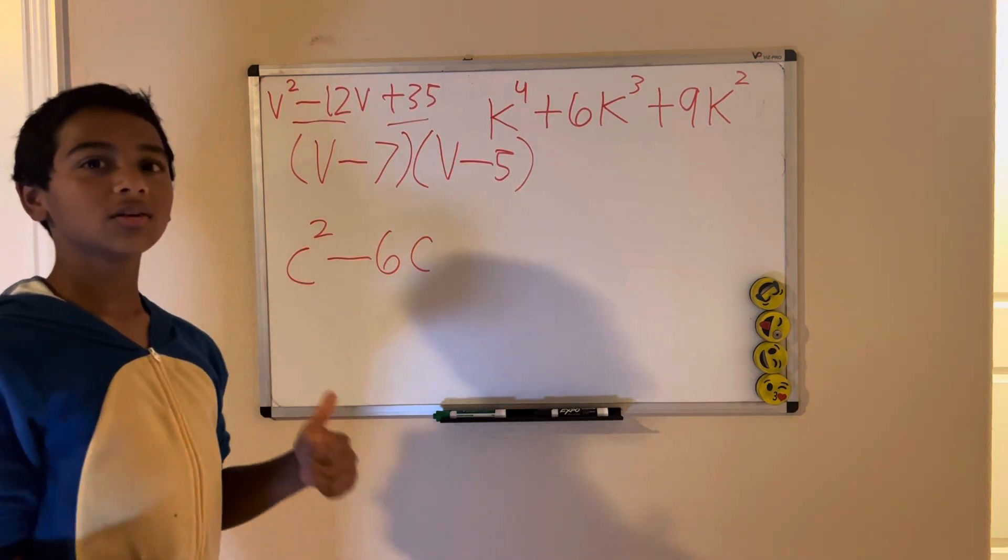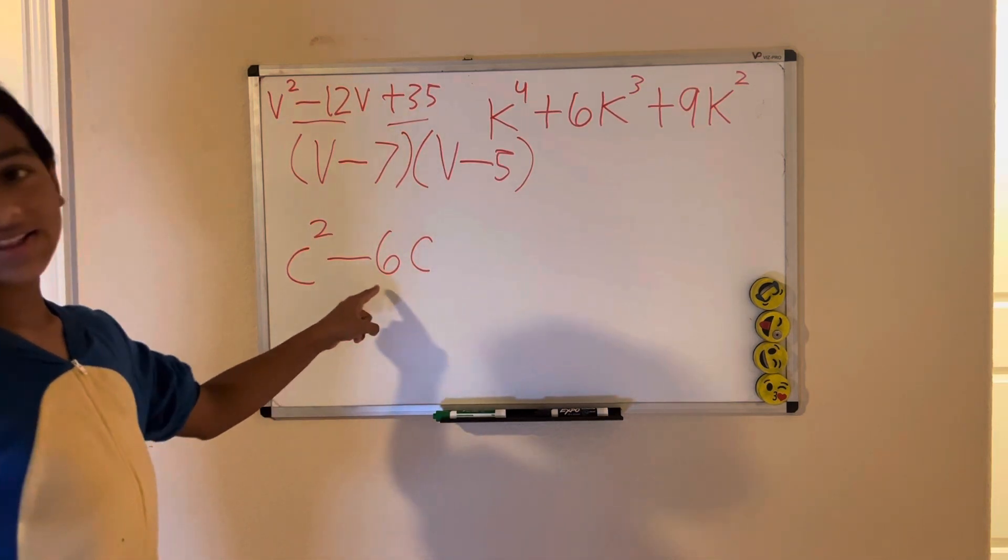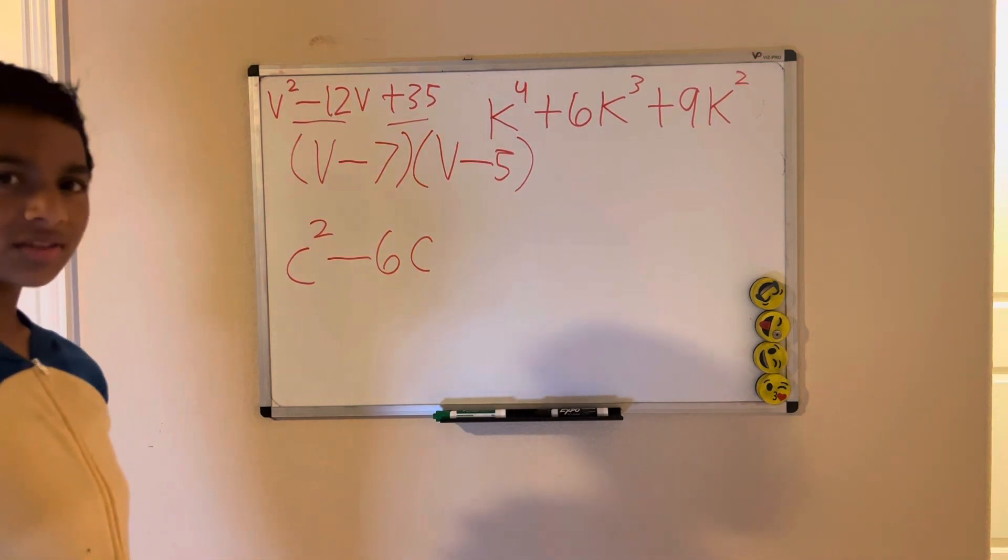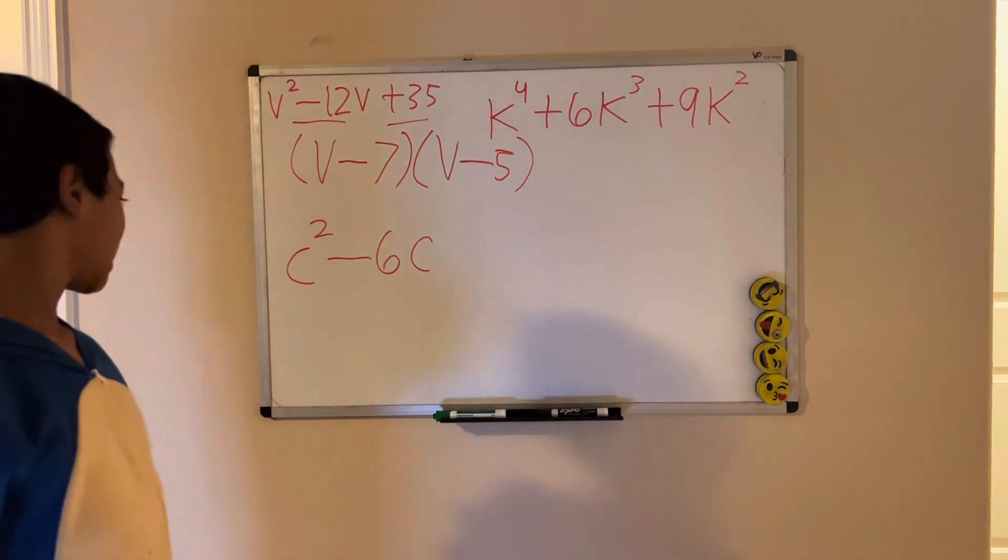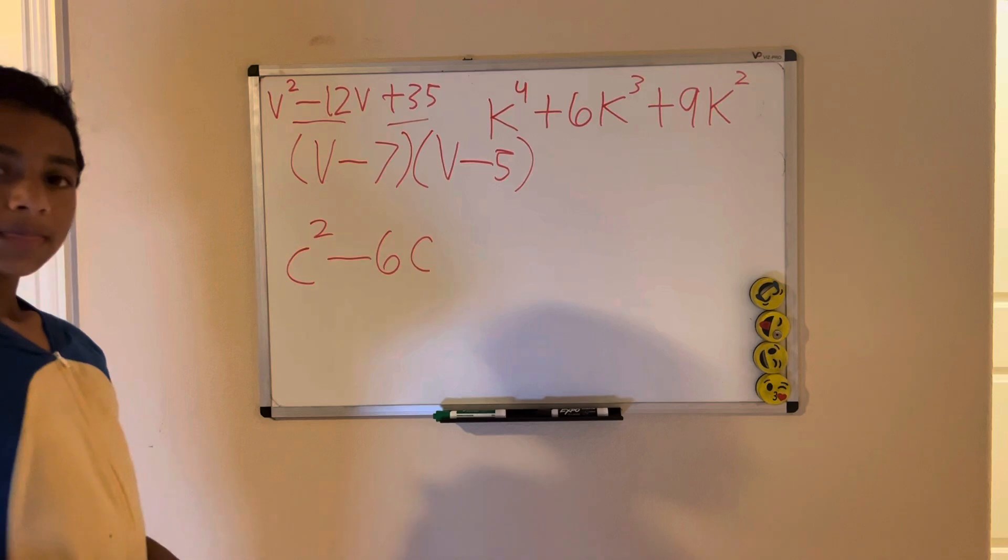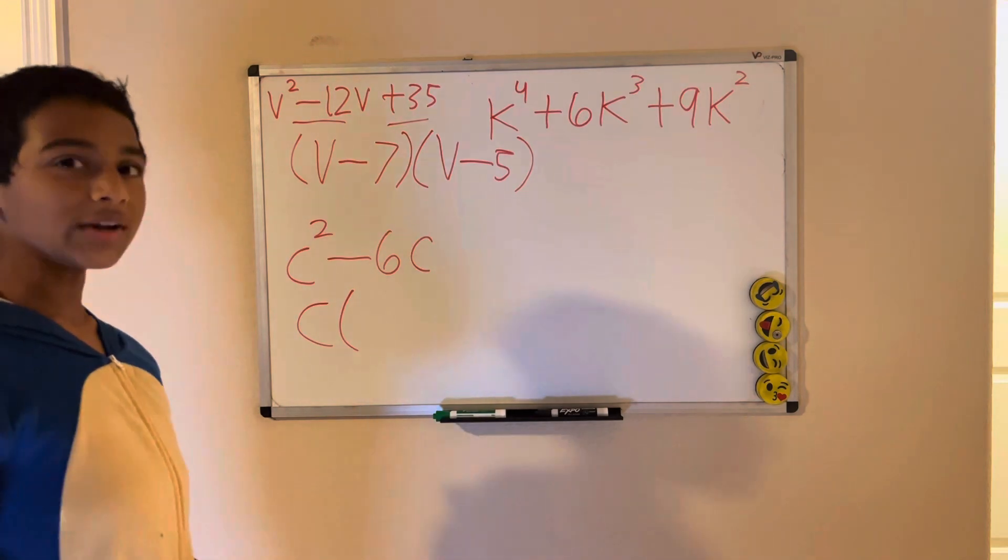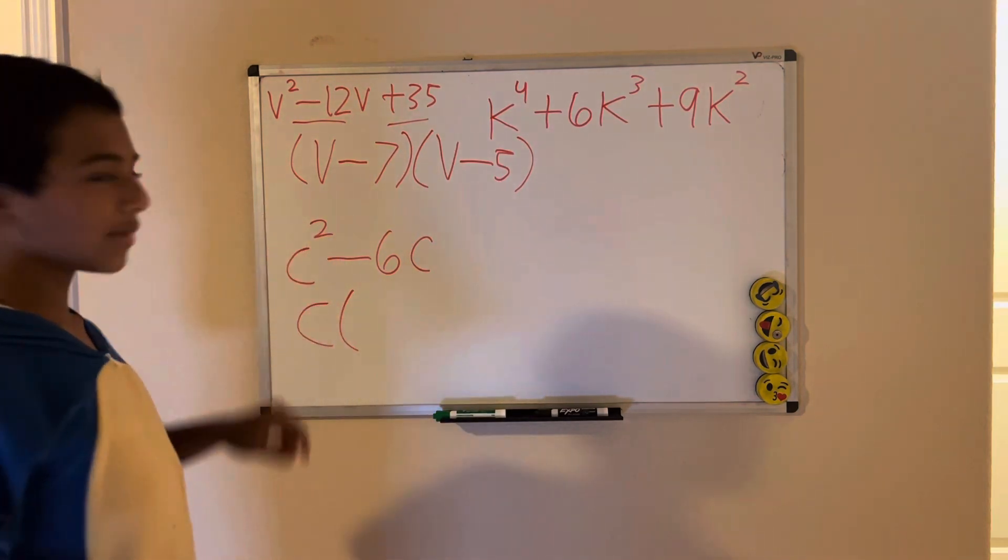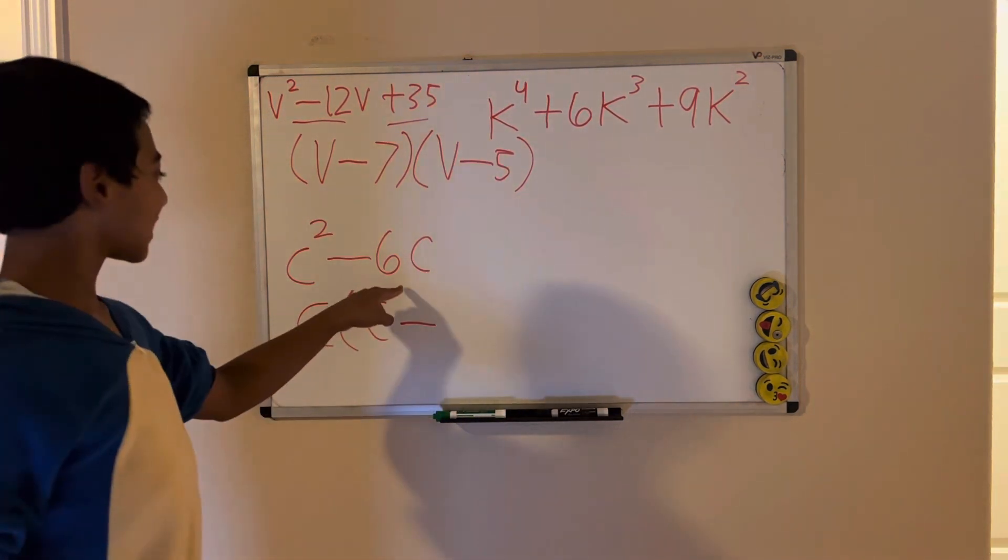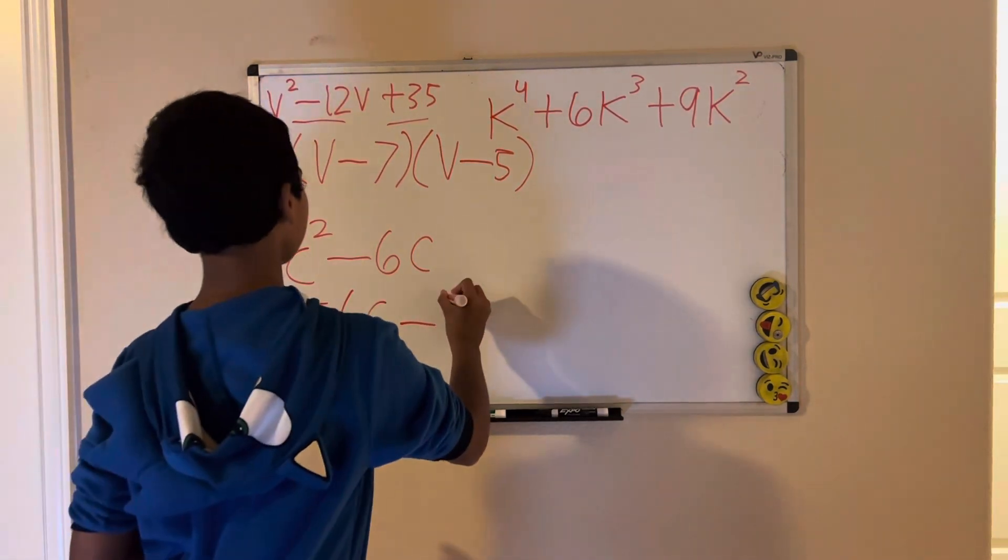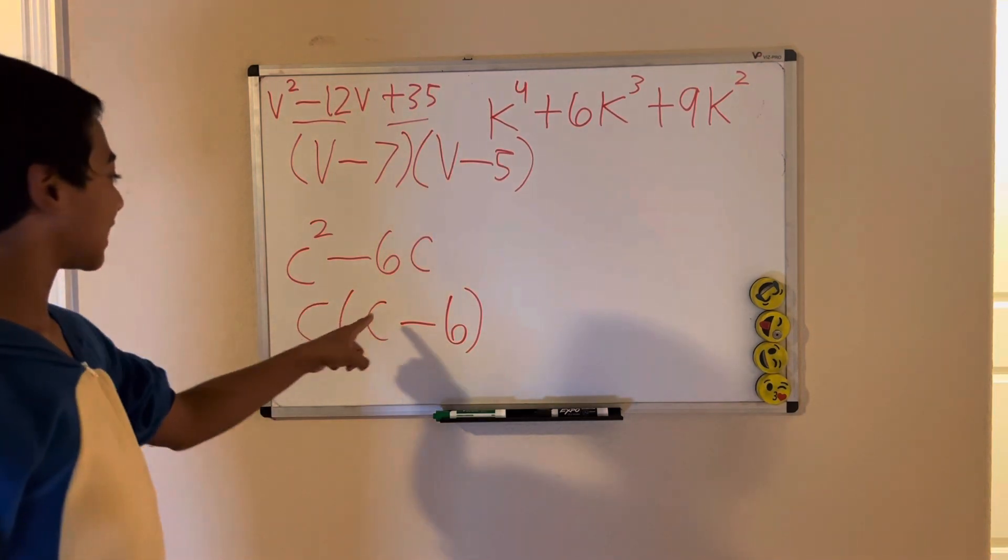To factor the second one, c squared minus 6c, we need to first figure out the greatest common factor. The greatest common factor is C, so we will have C times parentheses. Now we need to divide: c squared divided by c is c, and then 6c divided by c is 6. So our solution in number two is c times c minus 6.